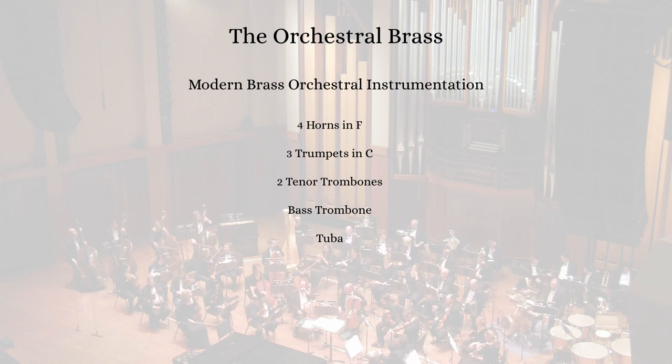While orchestral music instrumentation of today varies in size, it is most common to see four horns, three trumpets, three trombones, and a tuba. Modern orchestras will be much more inclined to program a new work with that instrumentation, and any additional instruments require more money to hire the musicians.